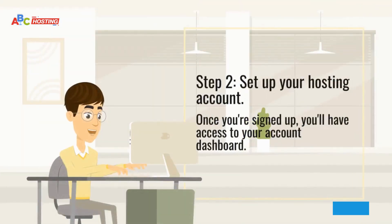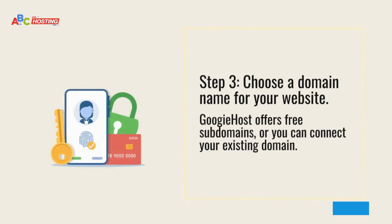Step 2: Set up your hosting account. Once you're signed up, you'll have access to your account dashboard. Step 3: Choose a domain name for your website. Gookiehost offers free subdomains, or you can connect your existing domain.